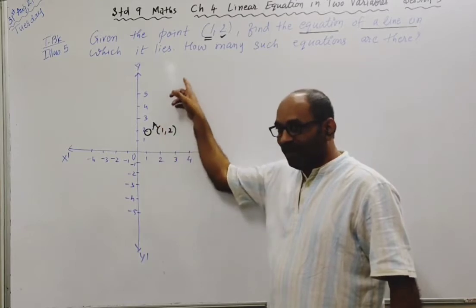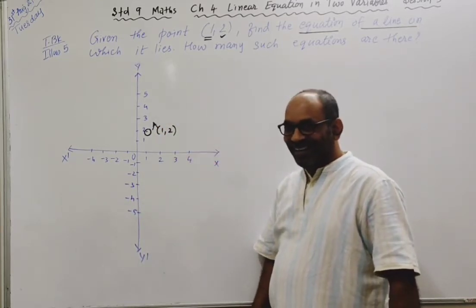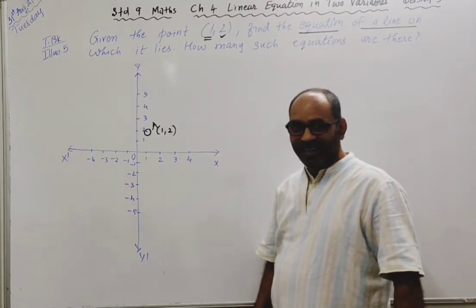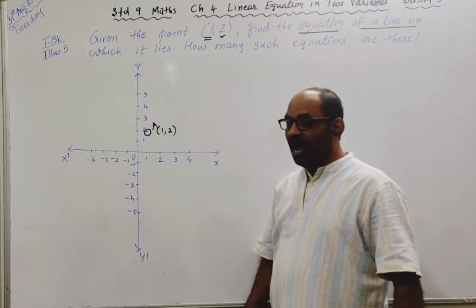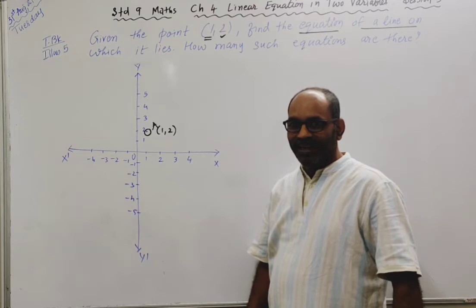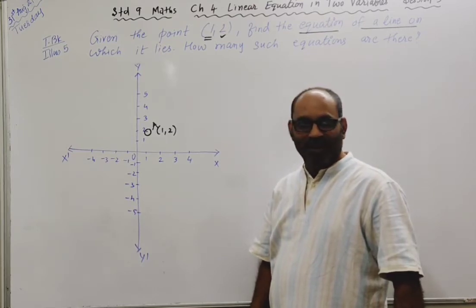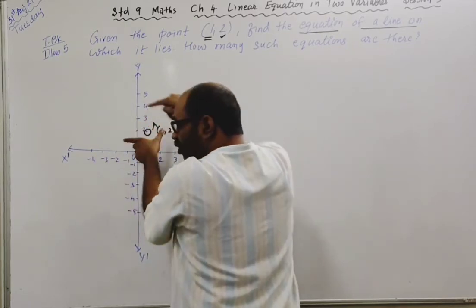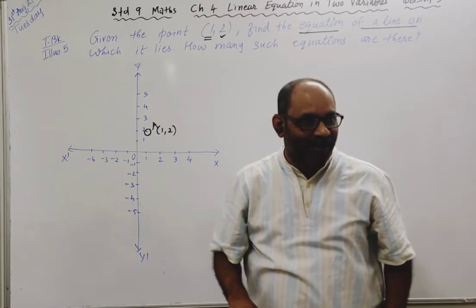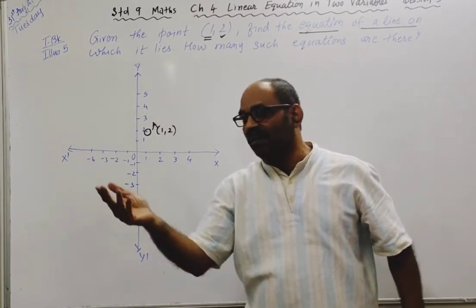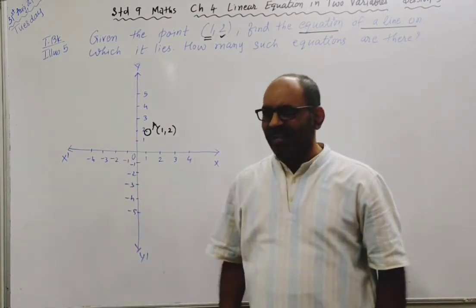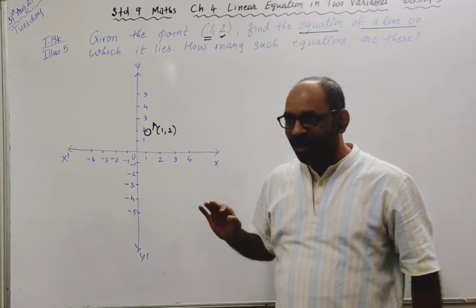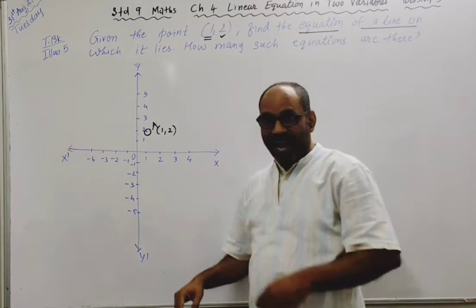Now tell me, which line has point A on it? Let me ask in a different way. How many lines pass through point A? How many lines can you draw which are passing through point A? There are infinite lines on which point A lies.